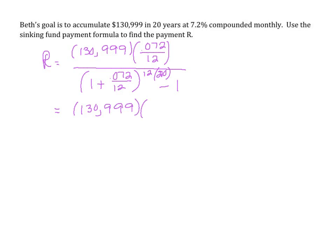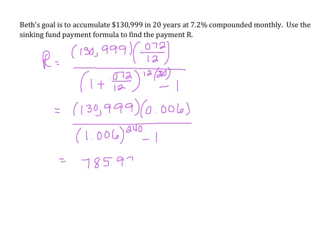Simplifying: 0.072 divided by 12 is 0.006, so we have 1.006 to the power of 240 (since 12 times 20 is 240), then subtract 1. Multiplying the tops: 130,999 times 0.006 gives us approximately 785.994. The denominator is 1.006 to the 240th power, which is approximately 4.2025, minus 1. Dividing gives a monthly payment of $245.43, which she would pay monthly to reach $130,999 at the end of 20 years.